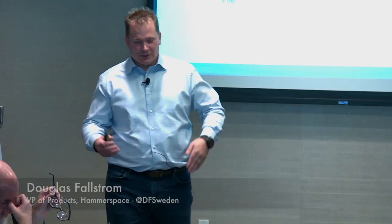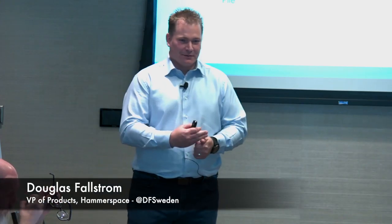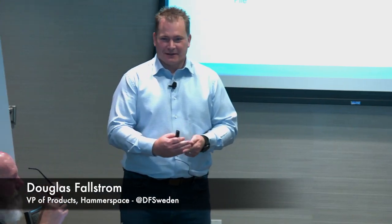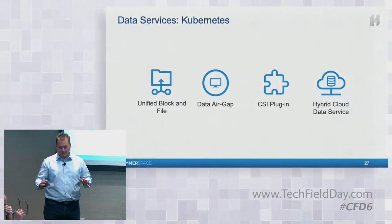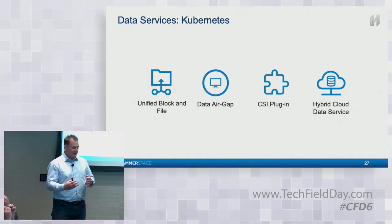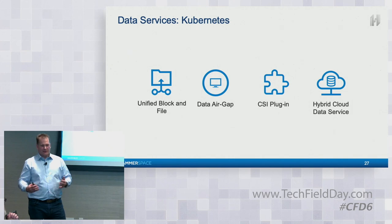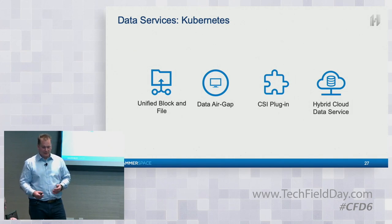For Kubernetes, we talked a lot about unstructured data, SMB, NAS access — it's great. Kubernetes is a little bit different. We still have our regular abstraction layer, but with Kubernetes we also allow you to get block access to data. The Kubernetes infrastructure allows us to do that.